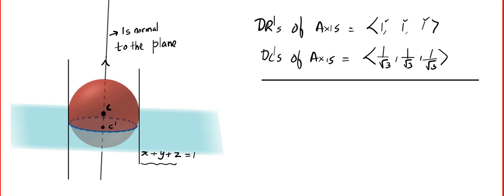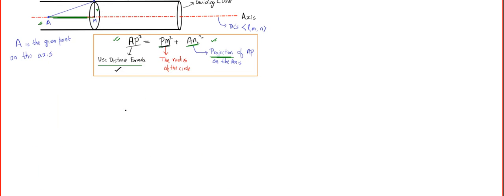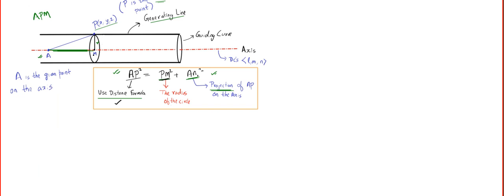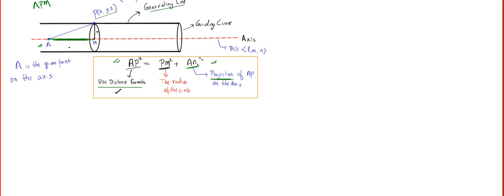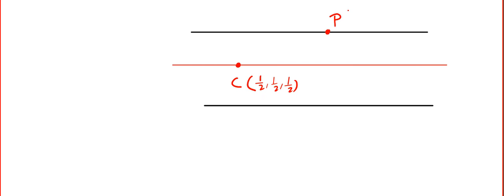Do you know any point on the axis? Yes — the point (1/2, 1/2, 1/2), the center of the sphere. We know everything we want. We draw the standard picture with our axis and the point on the axis is C — the center (1/2, 1/2, 1/2). We assume P as the locus point. Direction cosines are 1/√3, 1/√3, 1/√3, and the radius is √2/√3.